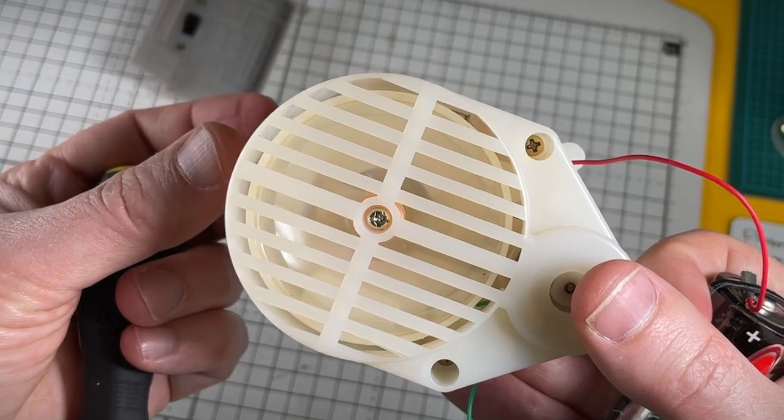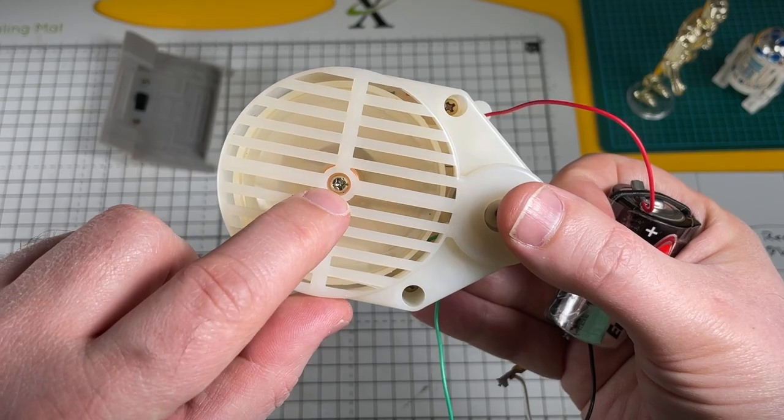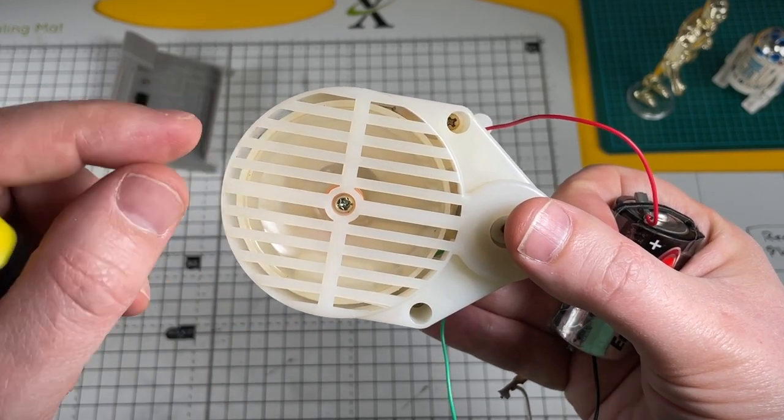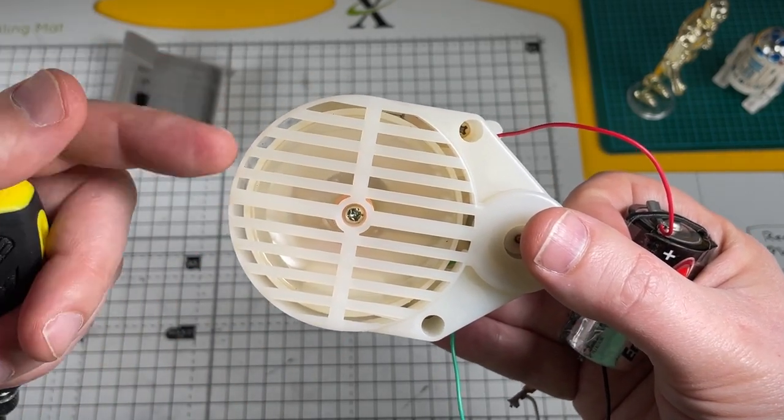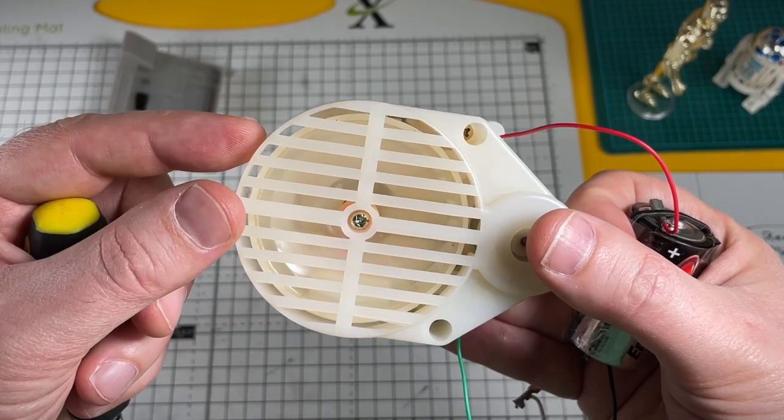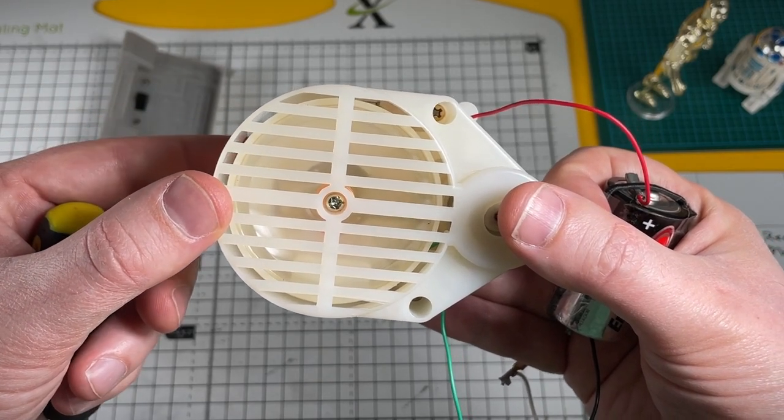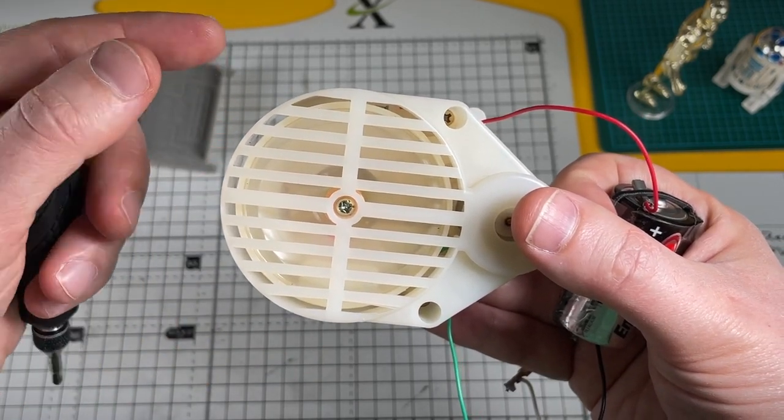If you do have random tracks played against the button, the tighter that screw the more chance that needle has of engaging with that lead track. If it's too loose then the possibility is that that needle will just jump over the lead track for that particular button sound and then move on to the next lead track.